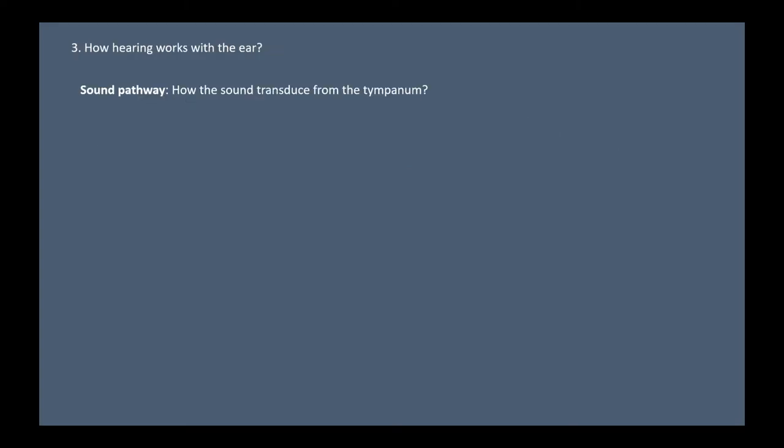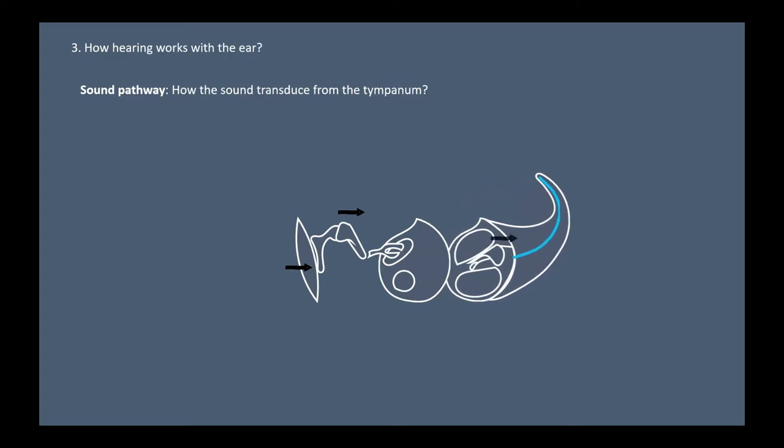So, how hearing works with the ear? When the sound wave hits the tympanum, the vibrations transmit to the malleus, incus, and stapes. At the end, the stapes changes the pressure that propagates throughout the liquid of the scala vestibuli at the speed of sound in one direction. These propagations cause the movement of basilar membrane, like up and down movement by the wave of a boat on the ocean. This is the first step of how hearing works.